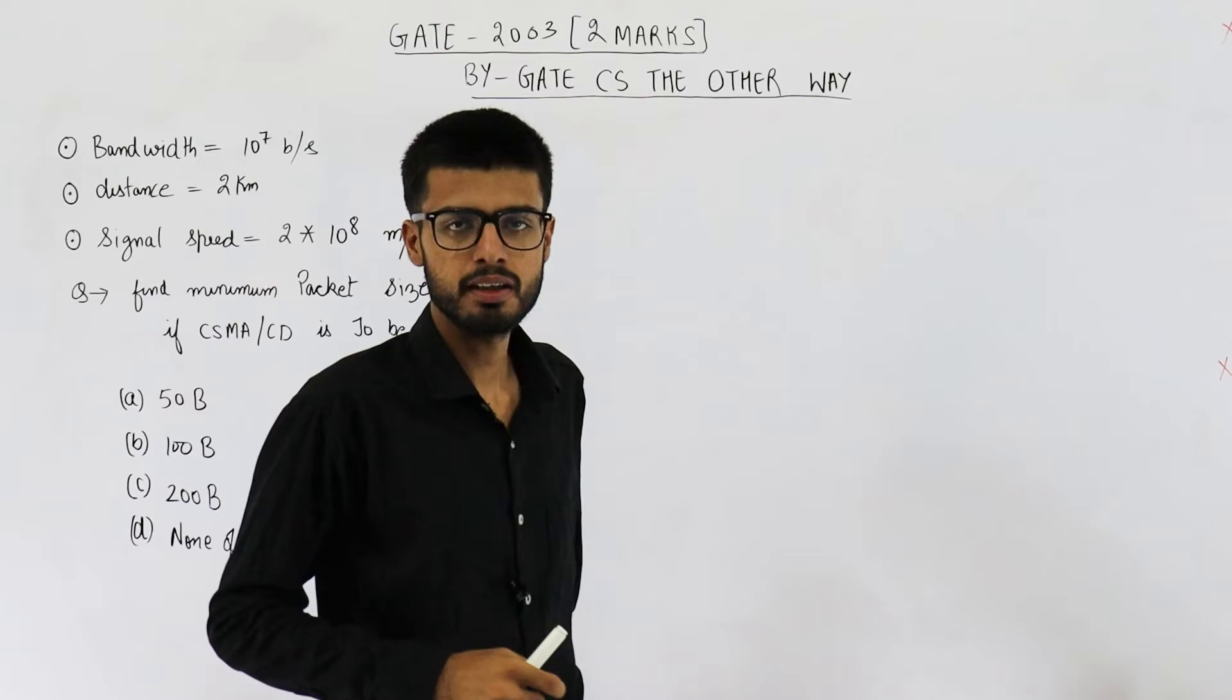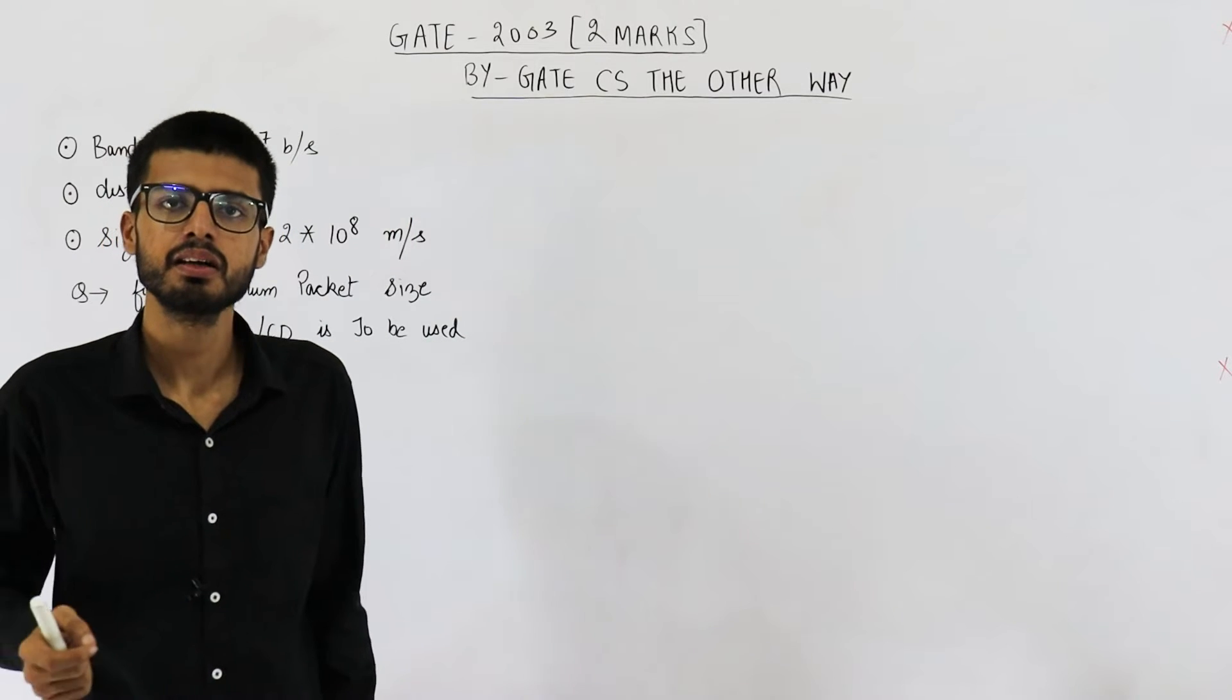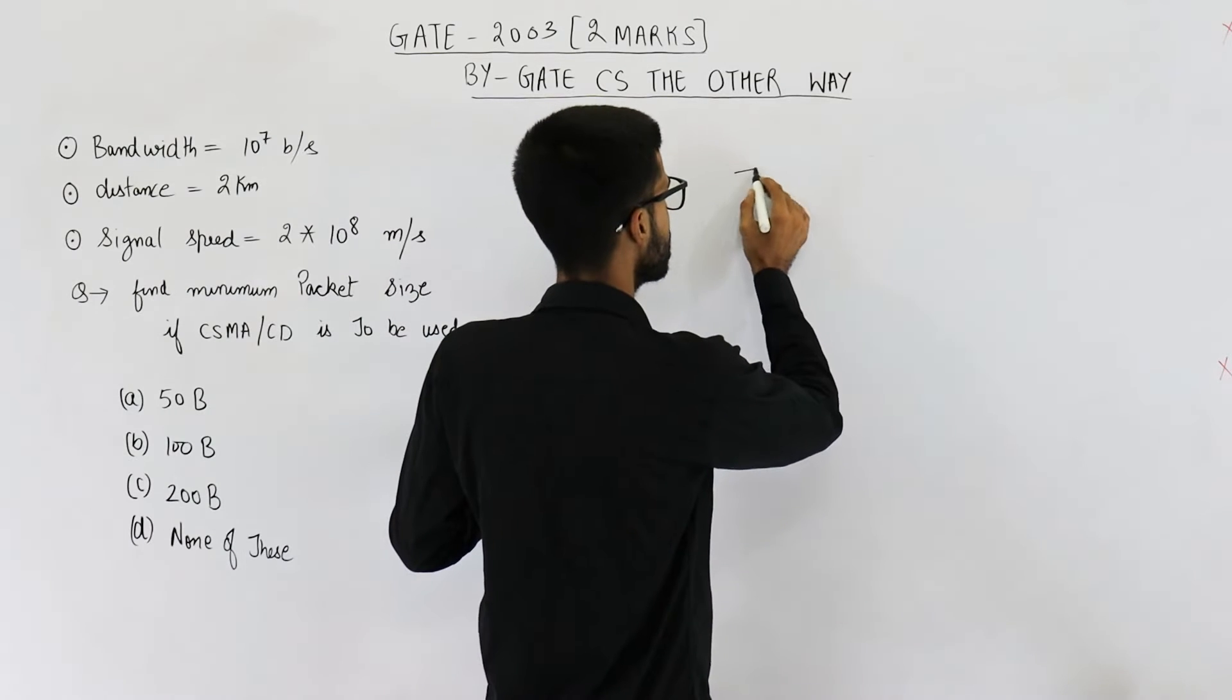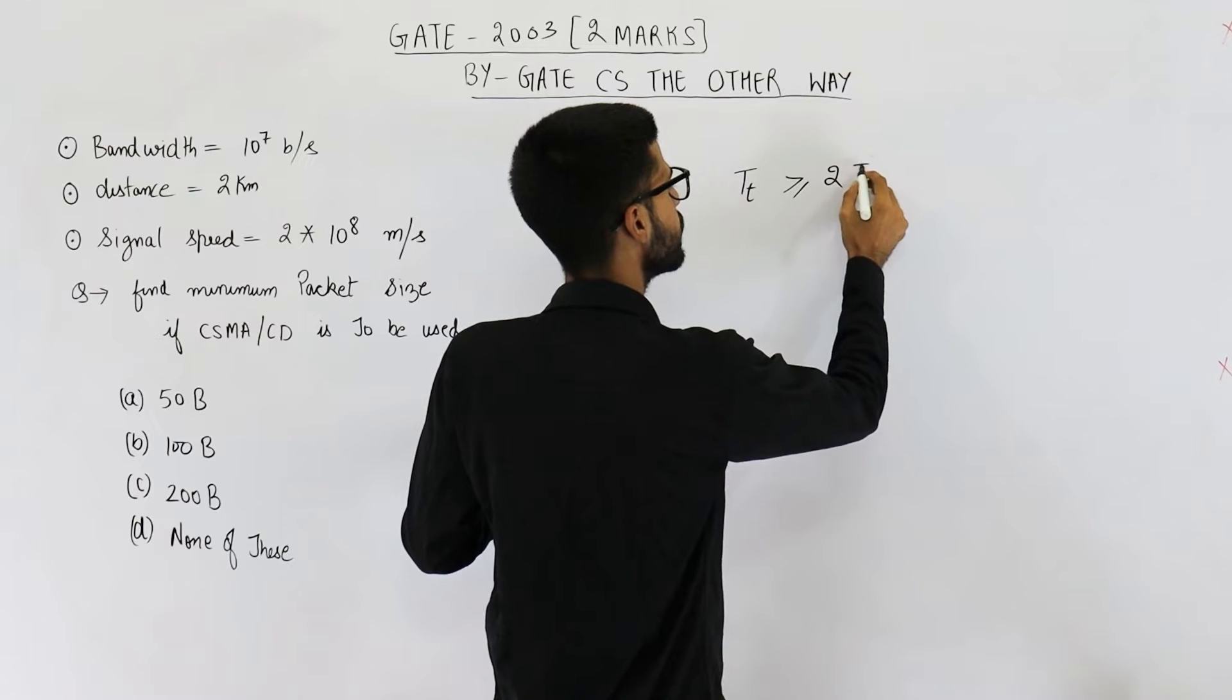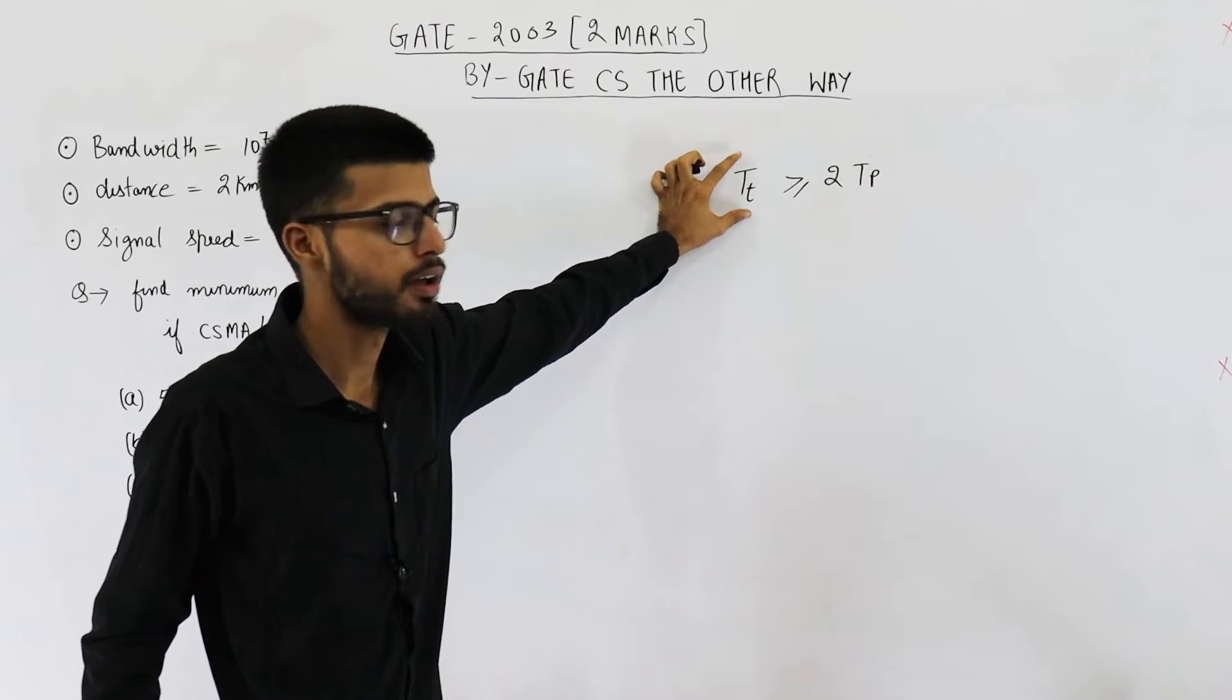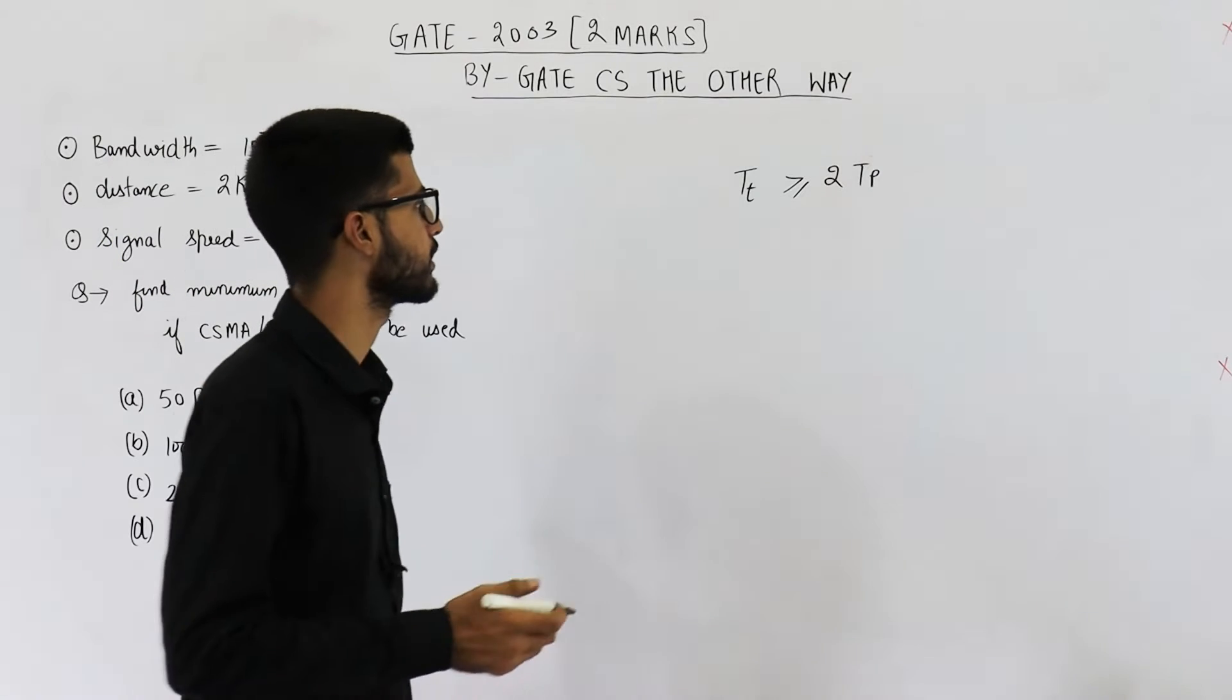Now in CSMA/CD, we need to keep on transmitting the data till twice of propagation delay. That means the transmission delay must be greater than equal to twice of the propagation delay. Now transmission delay is dependent on the packet size. So from this relation, we can determine what is the minimum packet size.